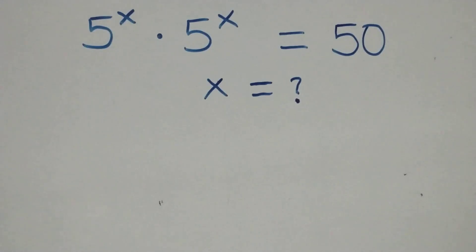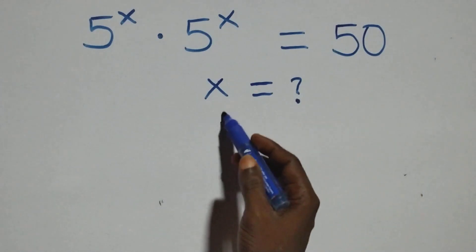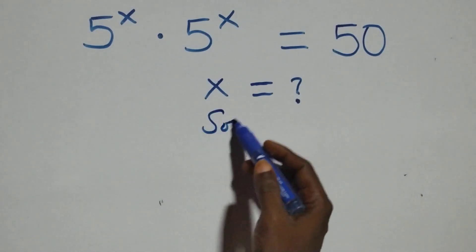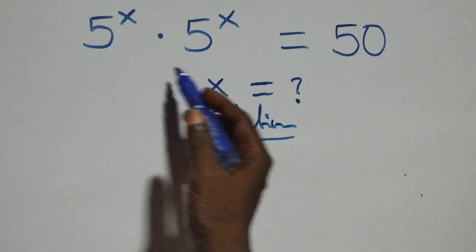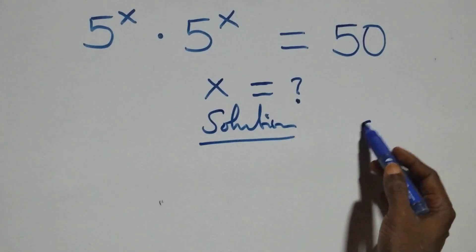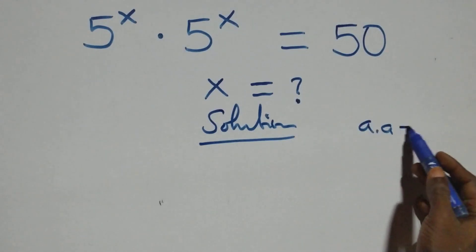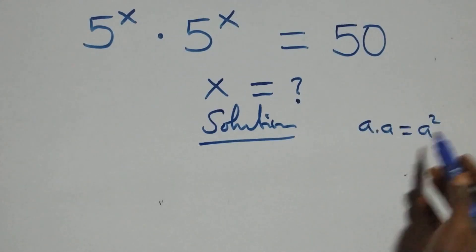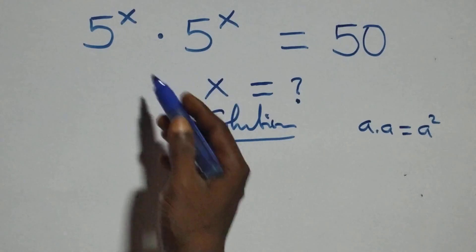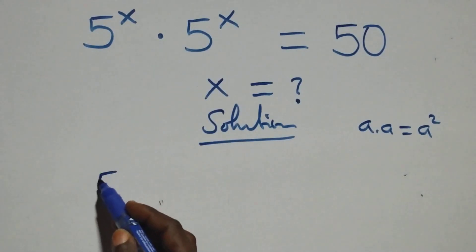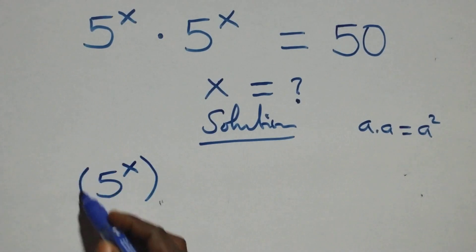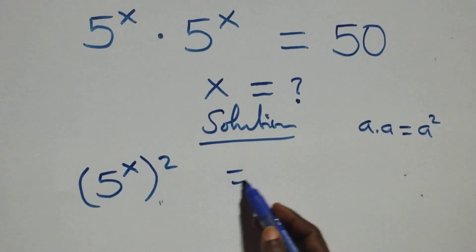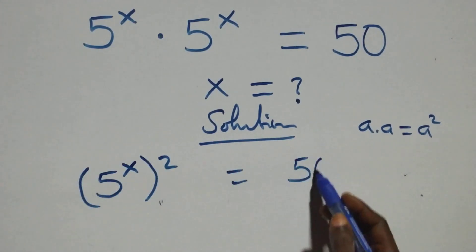Hello, you're welcome. How to solve this nice exponential equation. What we have here follows when we have a times a, written as a squared. We have this same thing multiplied, and we have 5 raised to power x, all squared, equals 50 on this side.